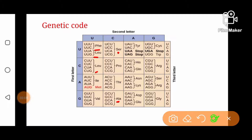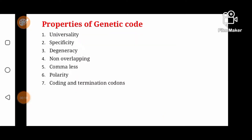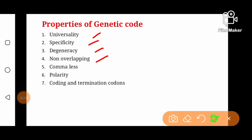Aur 3 codons out of 64 yeh stop codons hain ya termination codons hain. Jis ke samnay stop likha hua hai, yeh kisi amino acid ke liye code nahi kertay hain, balke yeh as a stop signal kaam kertay hain — yaani stop codon as a termination signal kaam kerta hai. Aur jab bhi mRNA mein yeh stop codon aata hai, to polypeptide chain synthesis wahan pe terminate hoti hai.